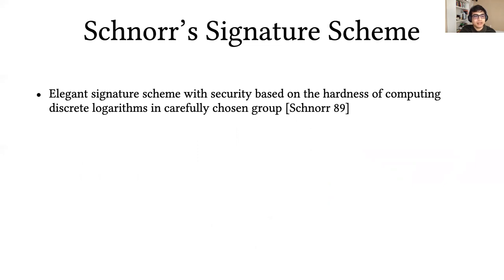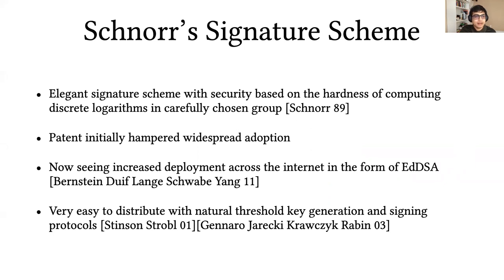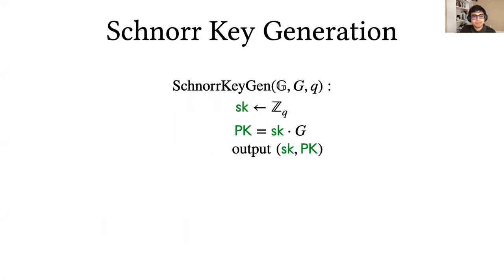We consider Schnorr's signature scheme in this work, which is an elegant signature scheme with security based on the hardness of computing discrete logarithms. The scheme was initially hampered in terms of adoption due to a patent, but is now seeing more deployment across the internet in the form of EdDSA. The nice thing is that it's very easy to distribute with natural threshold key generation and signing protocols.